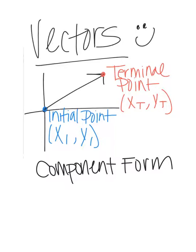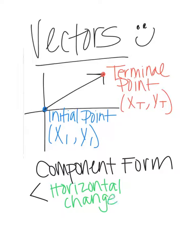Component form shows how a vector has changed horizontally and vertically from the initial point to the terminal point. The first part is in brackets and represents the horizontal change. I showed you a picture of what the initial point and terminal point look like — it's like a ray. The initial point in this example is at the origin, and the terminal point is out here in quadrant one.